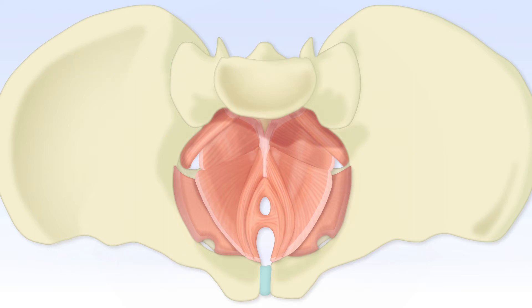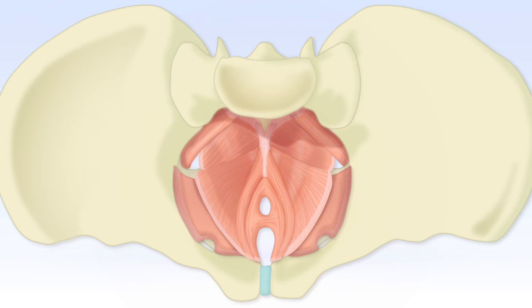The pelvic floor consists of three different layers, mainly muscular tissue but also fibrous structures like the endopelvic fascia and connective tissues. The deep layer of the pelvic floor muscles comprises the levator ani, consisting of puborectalis, pubococcygeus, iliococcygeus, and coccygeus. Also present in the pelvic cavity but not belonging to the pelvic floor muscles are piriformis and obturator internus.